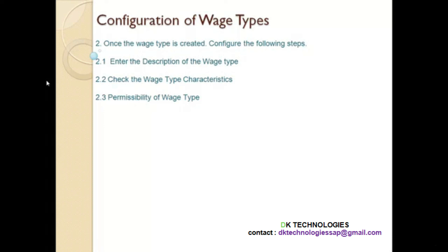Once the wage type is created you have to configure some of the following steps: you have to enter the description of the wage type, check the characteristics of the wage type, and you have to permit the wage type. For example, there is a bonus wage type — is it permissible for every employee in the company? No. The company may not permit bonus for all levels. But for a colleague belonging to a different employee subgroup, he may be getting a bonus wage type. So in the system you can also permit the wage type — specifying which employees are eligible for a particular bonus or other wage type.